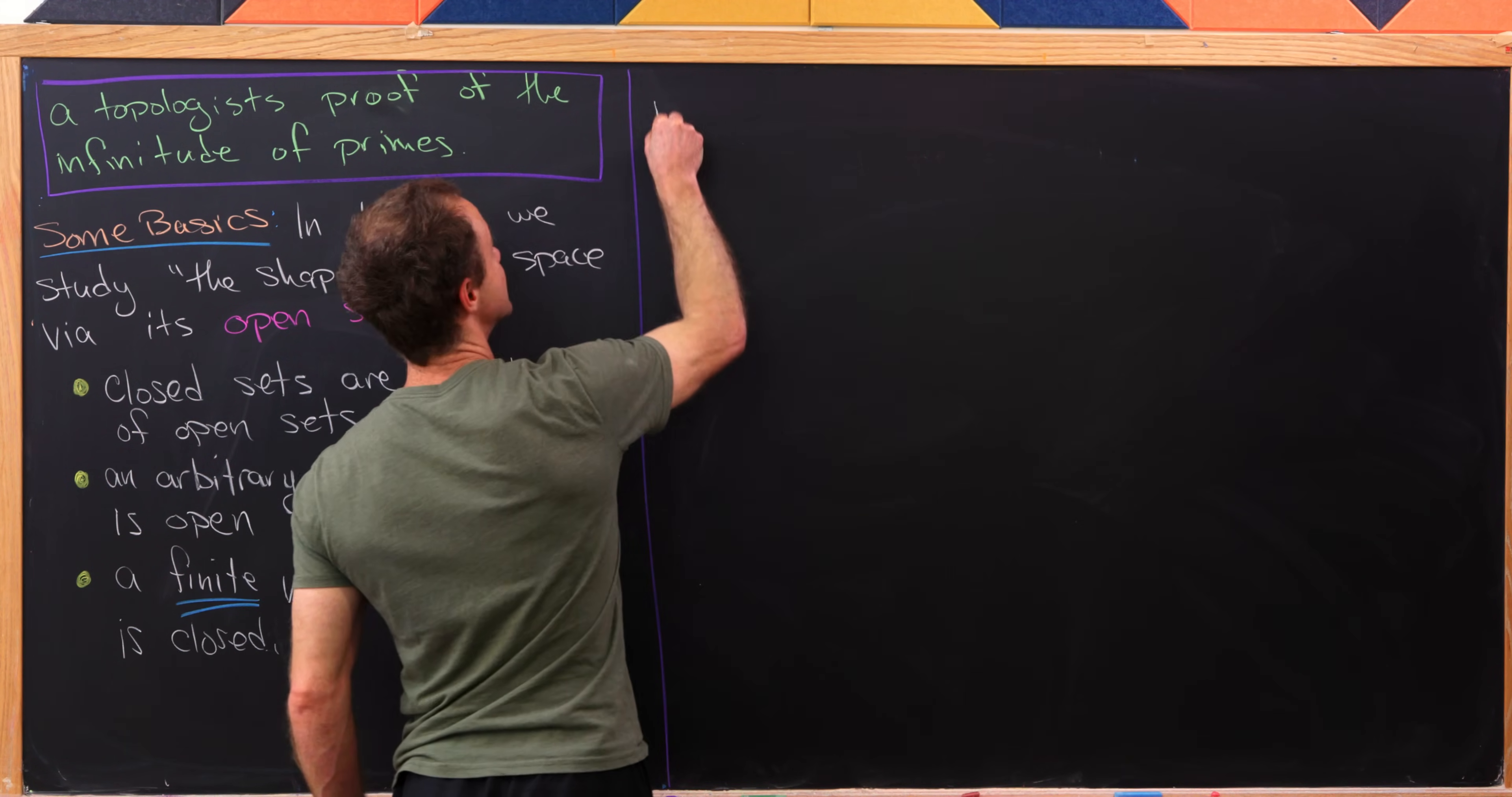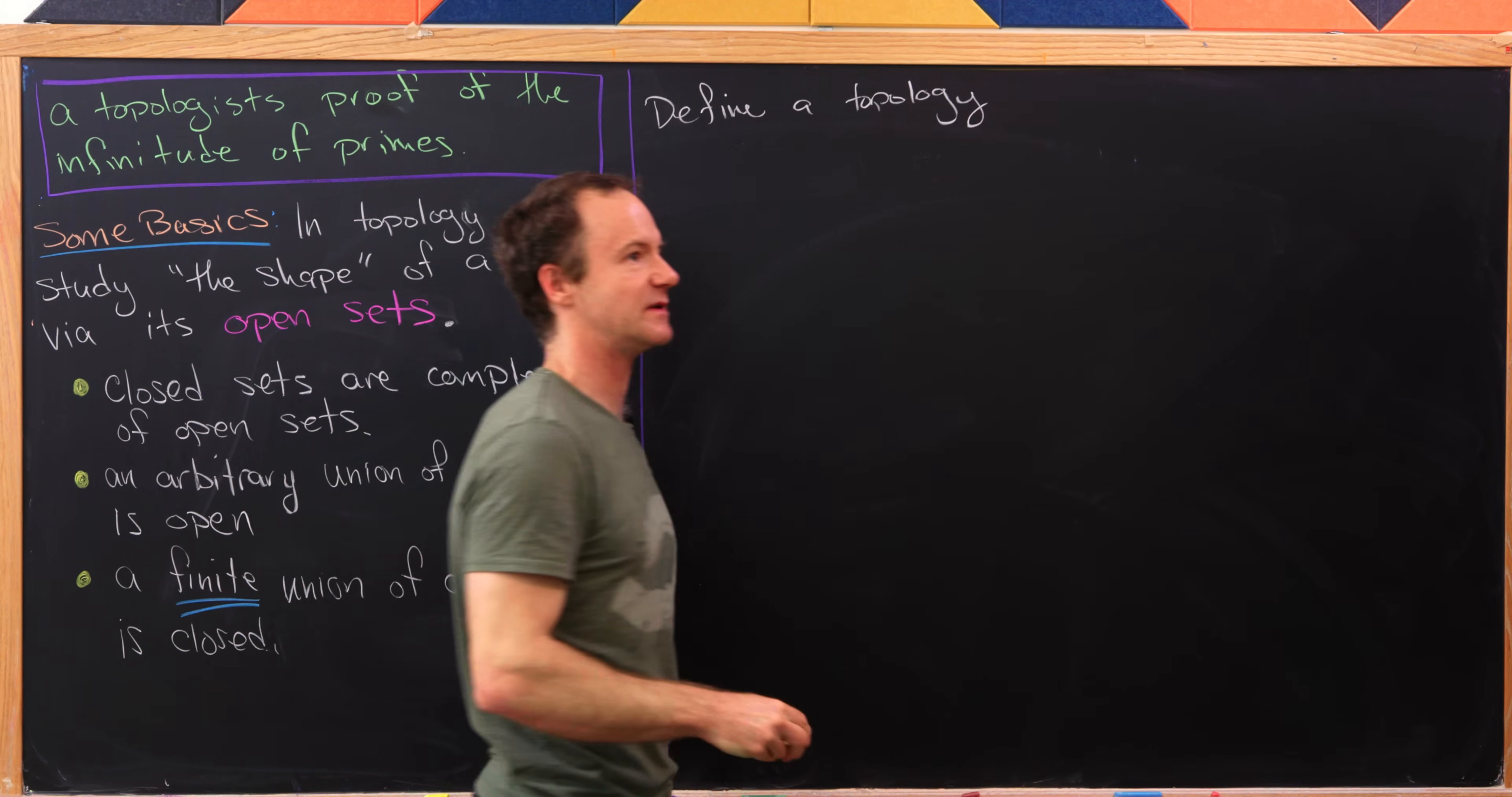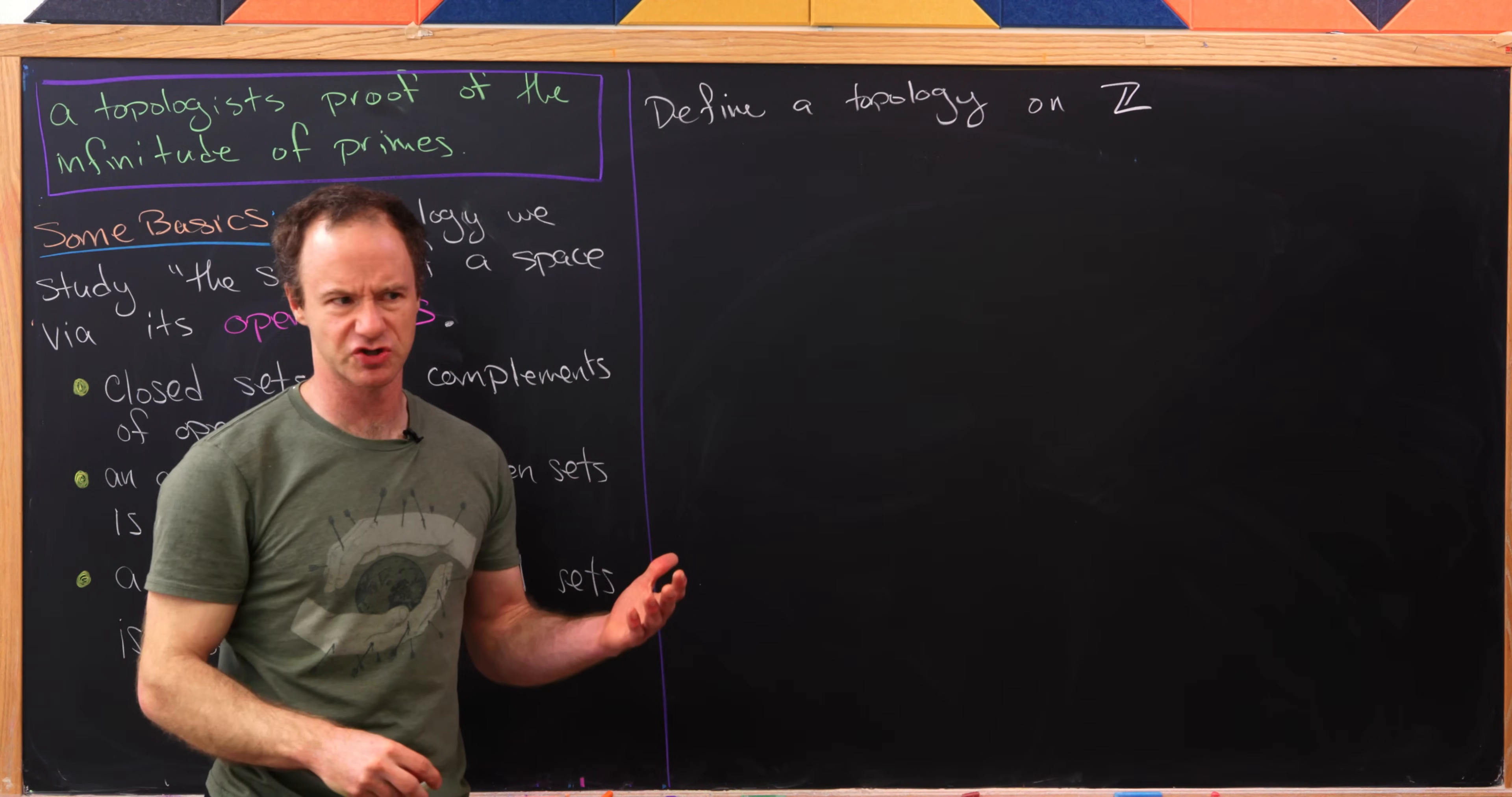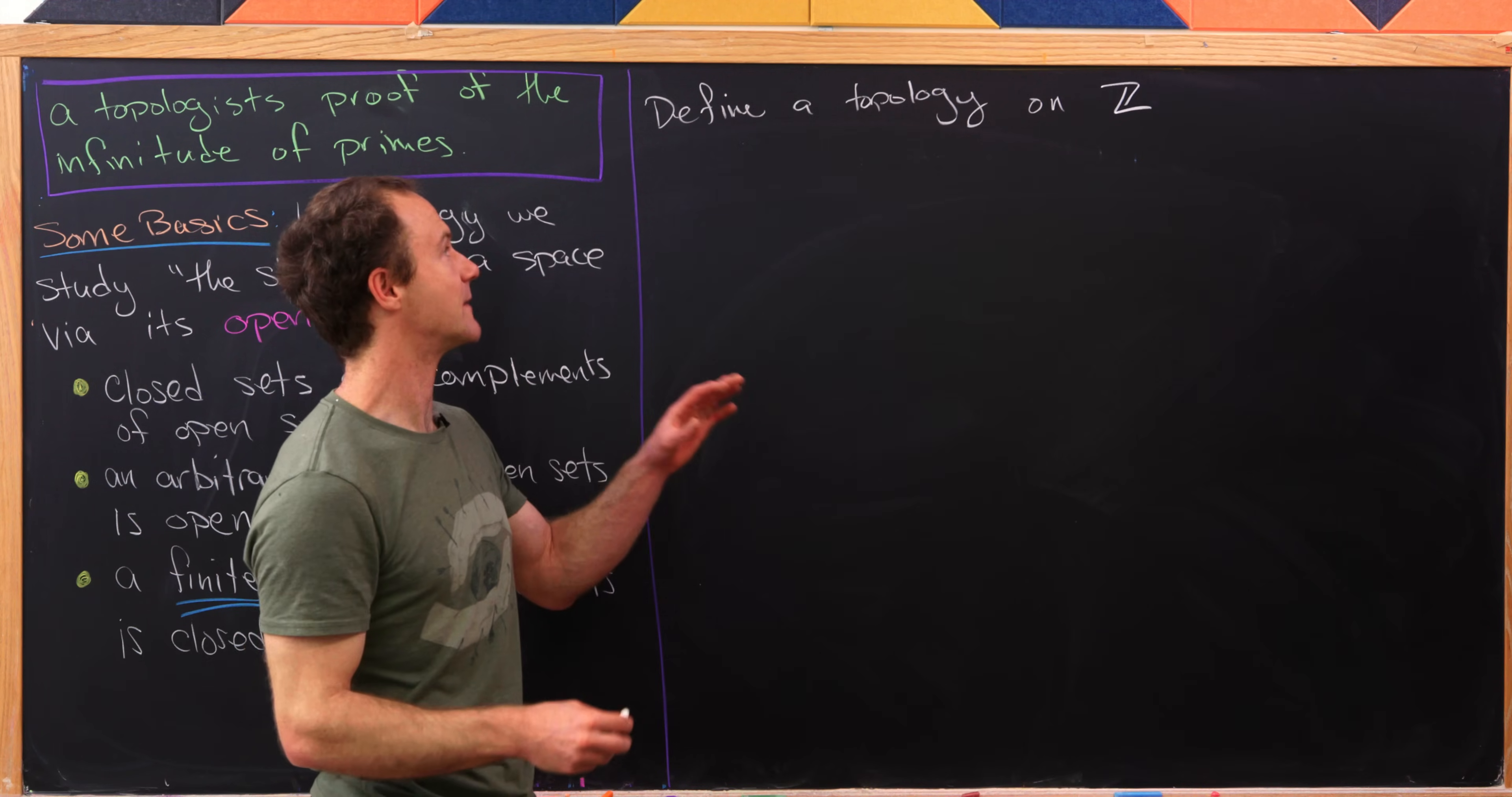Okay. So the first thing that we need to do is define a topology. And what I mean by defining a topology, I mean we're going to say what the open sets are. So in this topology, we'll be on the set of integers. And this makes sense because we're trying to talk about the infinitude of primes. And prime numbers naturally live within the integers.